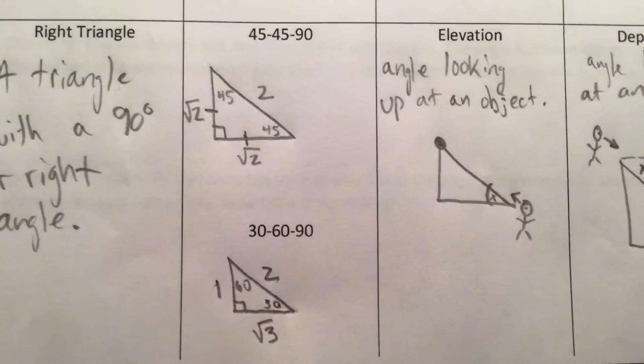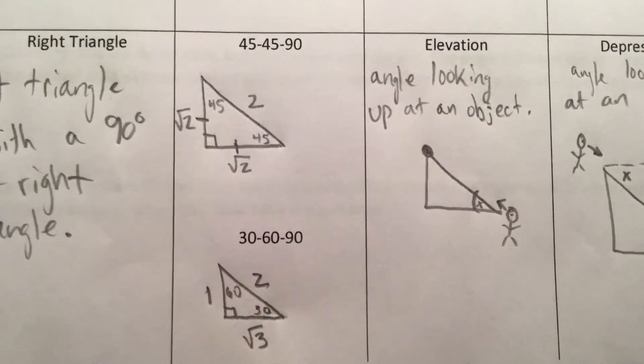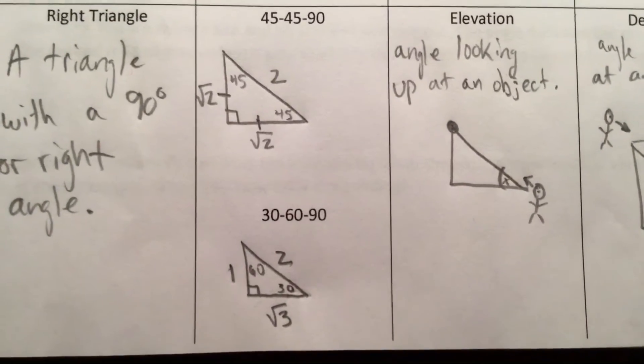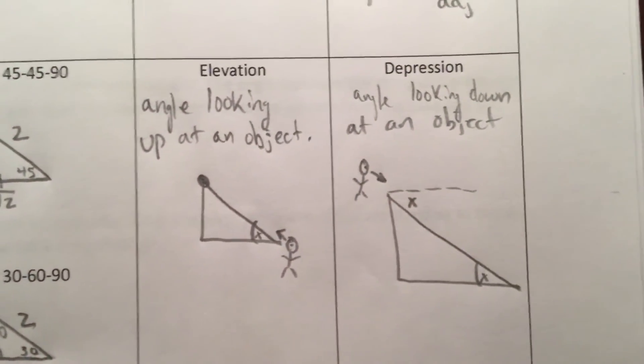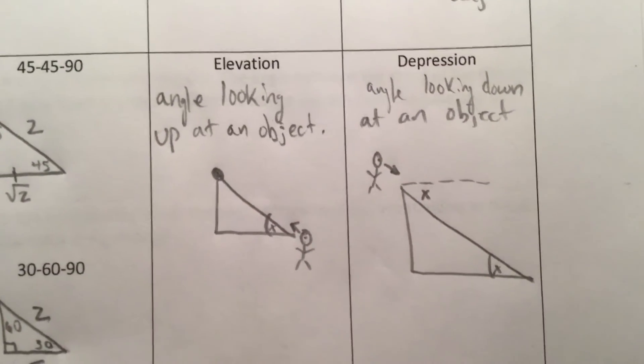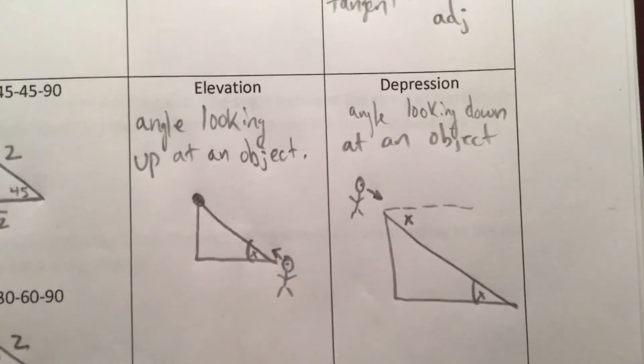It's not a 1-2-3 because that's the angle ratio; it's 1 : √3 : 2 for the side lengths. An elevation angle is your angle looking up at an object, and a depression angle is your angle looking down on an object.